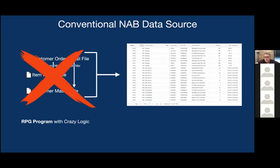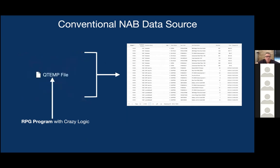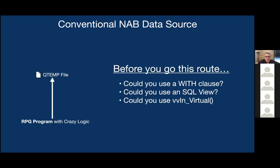They need an RPG program with some complex logic to drive the data. We have a provision for that called the pre-execution program. Using a pre-execution program, the data source is actually driven by a call to an RPG program. That output is typically sent to a temporary file in QTEMP, which can then be used to feed the data source. That's basically the premise of the blog post — taking an RPG program that does print file or O-spec type output and adjusting it to instead feed a data source, turning your printed output into a web app in Valence.